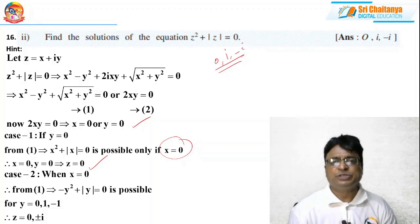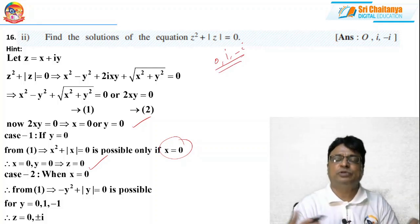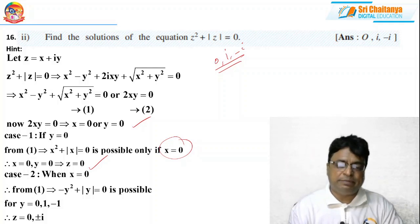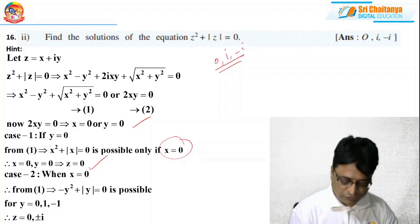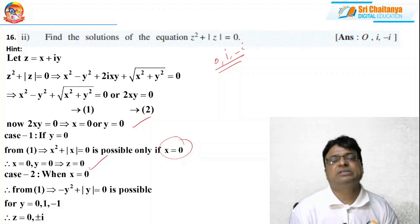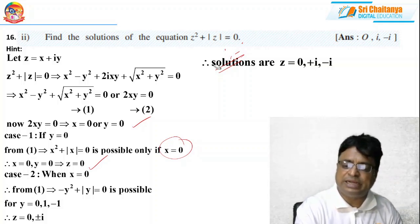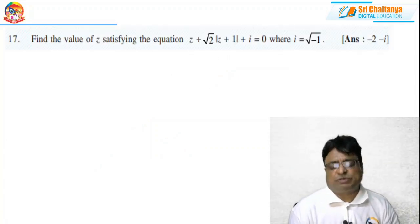Totally we got three solutions. Sometimes they may ask the number of solutions, total number of solutions, sum of solutions, or create other questions based on these solutions. Please get awareness of these particular questions. My solutions are z = 0, z = i, and z = −i.